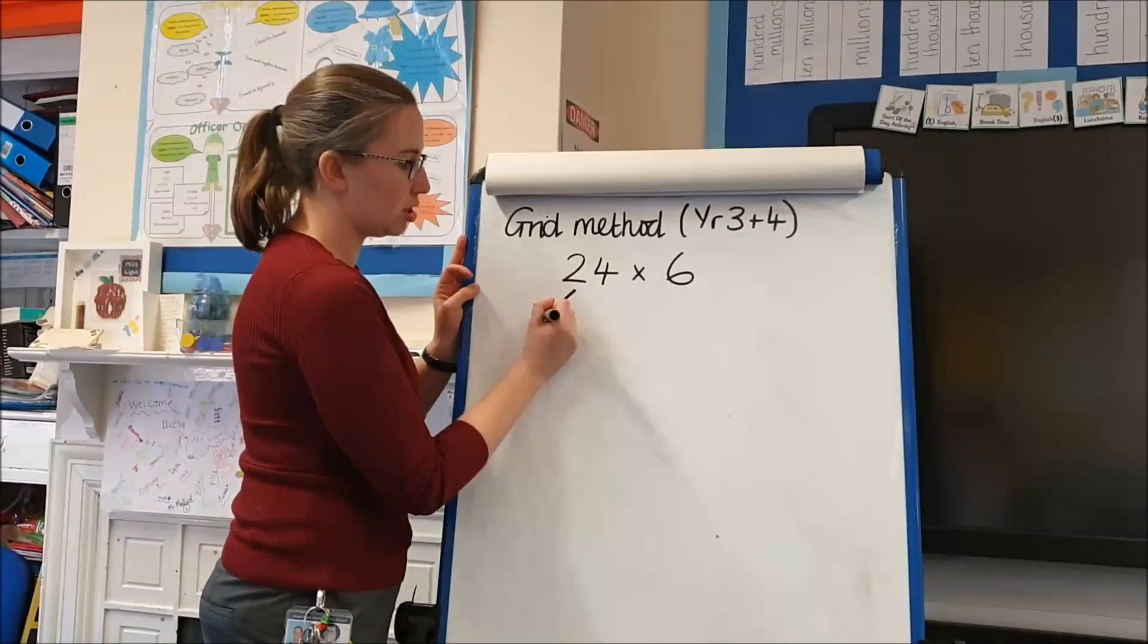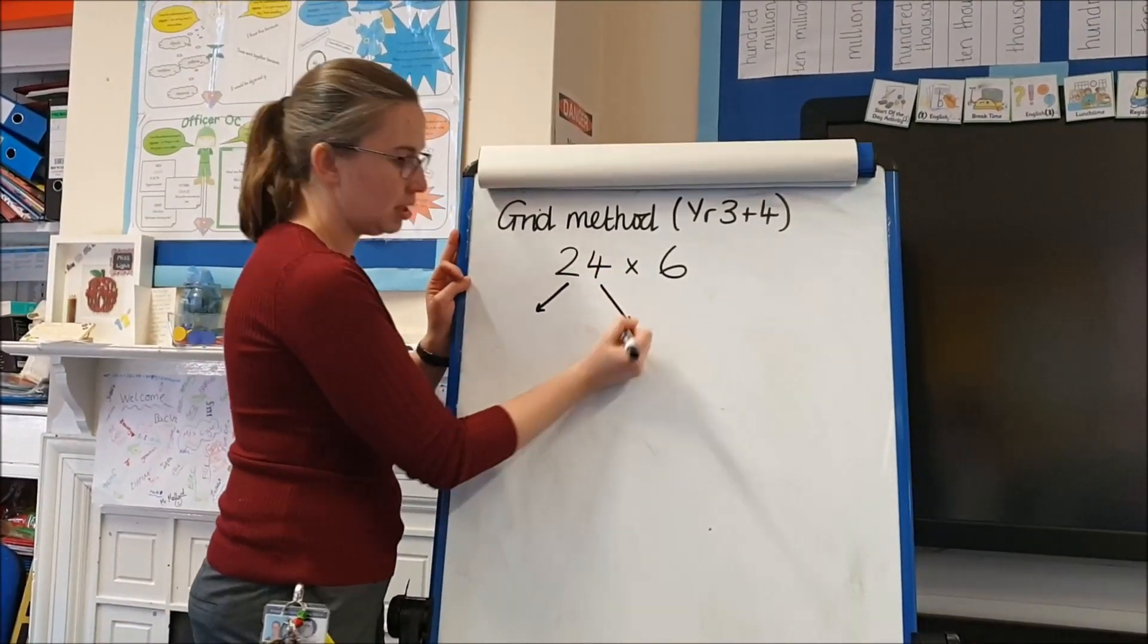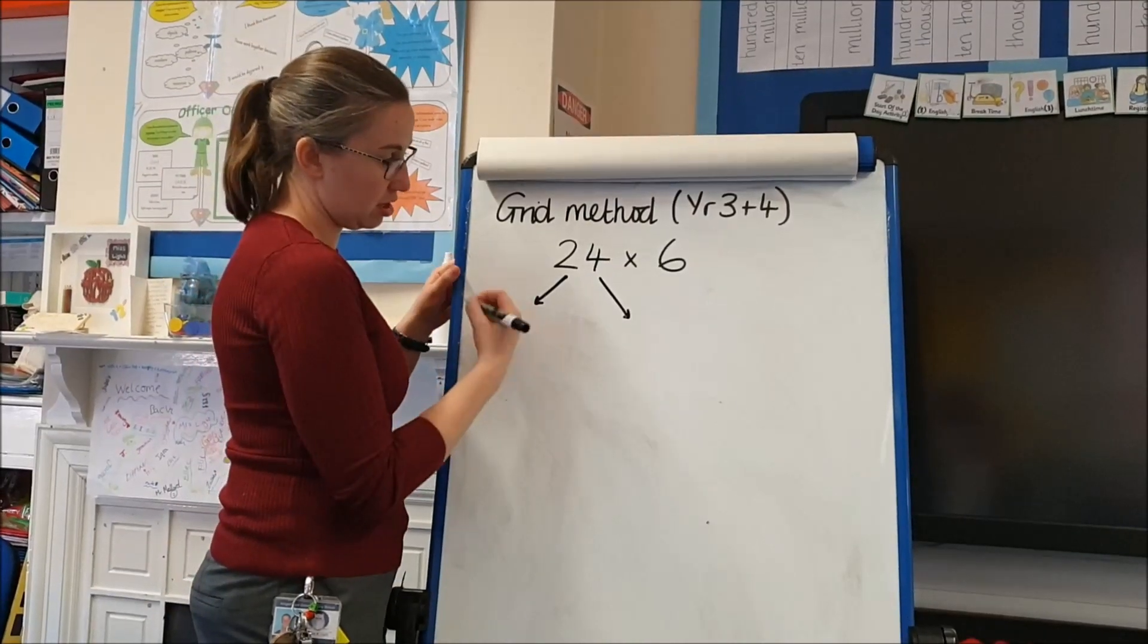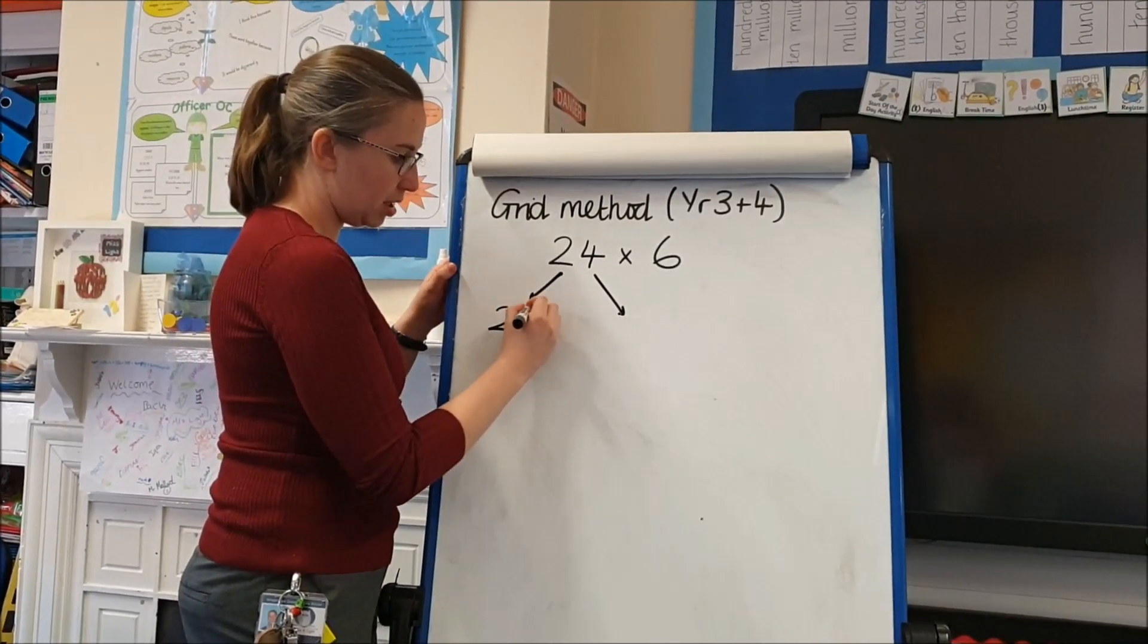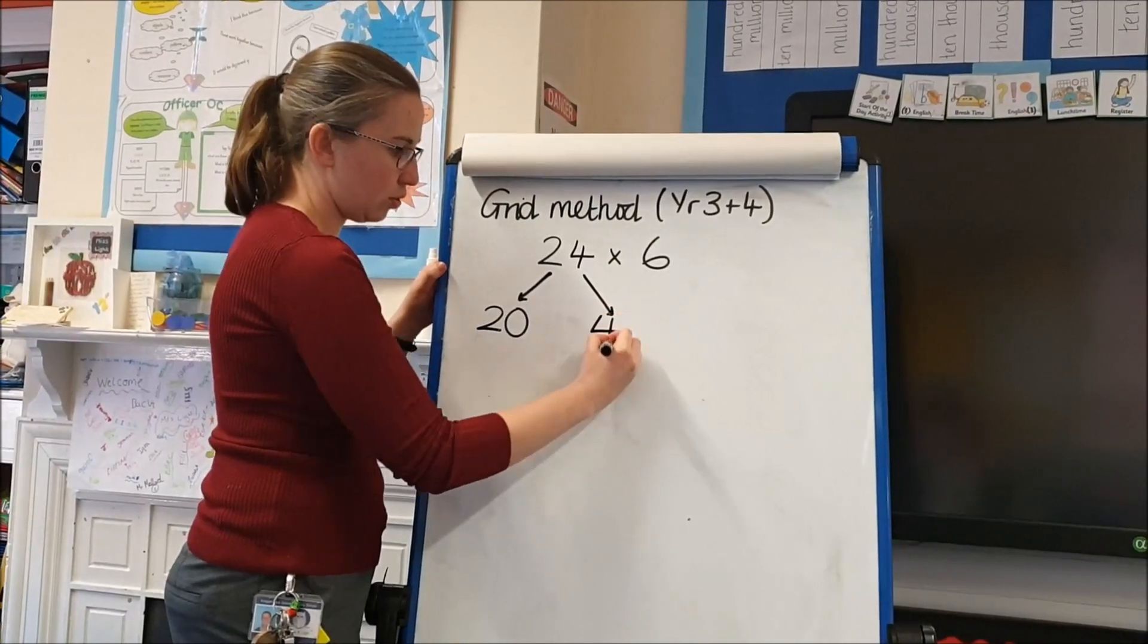Grid method encourages children to look at a number and partition it into its components, into its tens and ones. So we can partition 24 into 20 and 4.